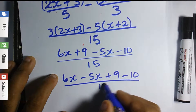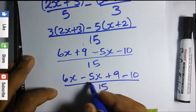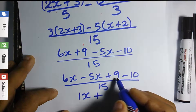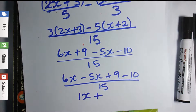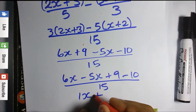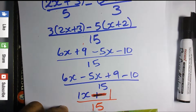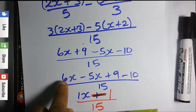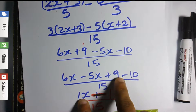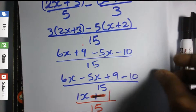Simplifying: 6x minus 5x is x, and 9 minus 10 gives us negative 1, all over 15. So our solution is (x − 1)/15.